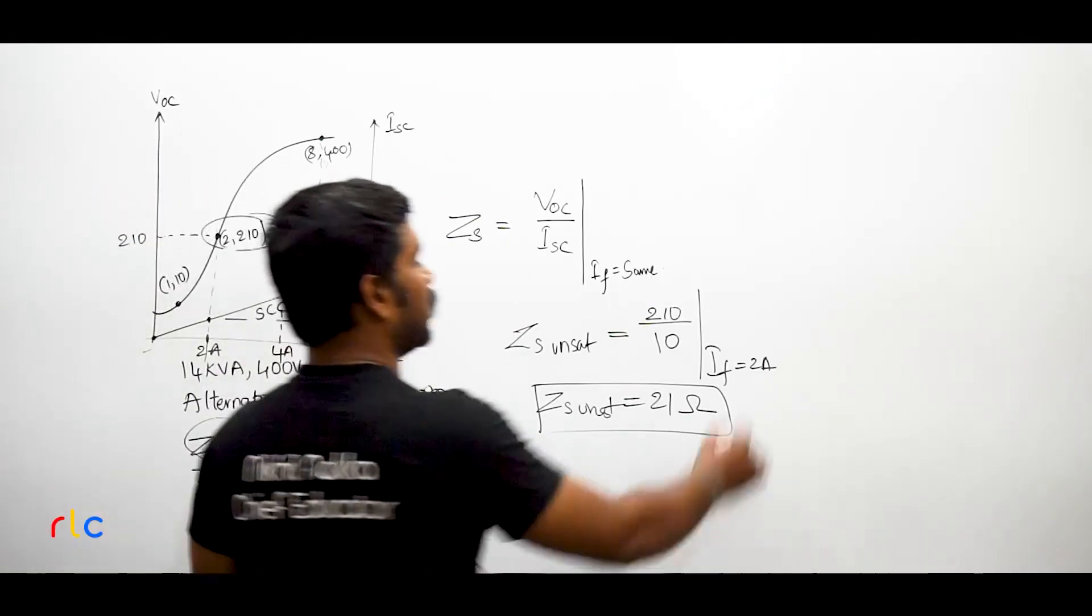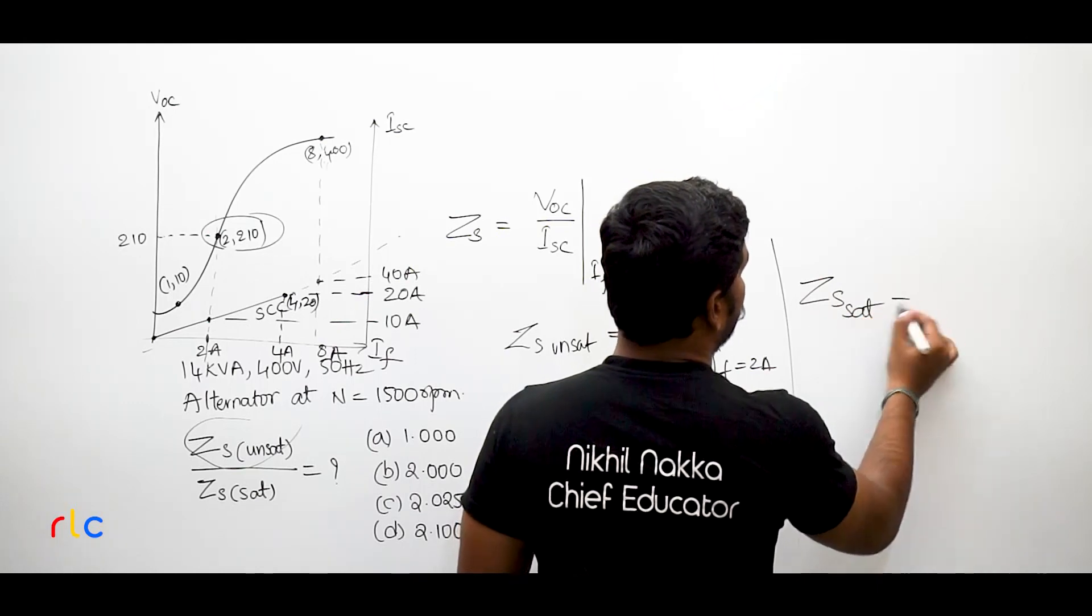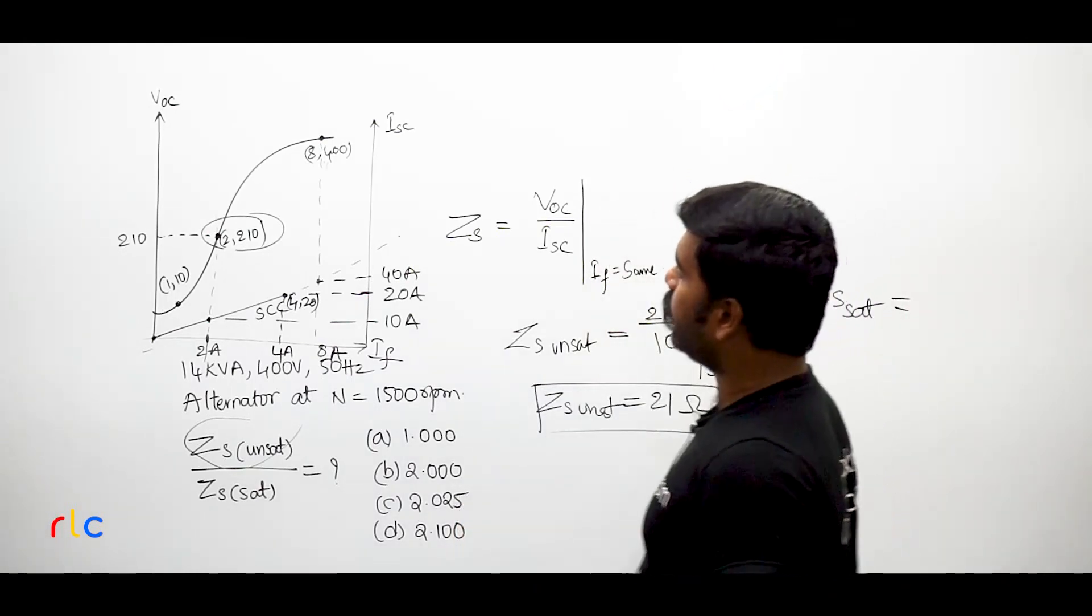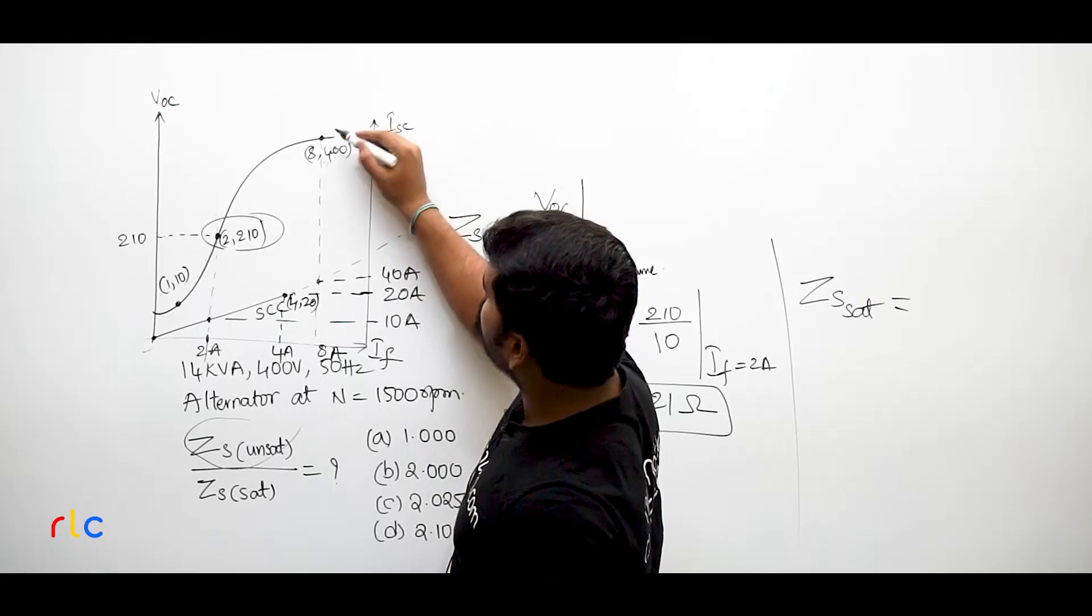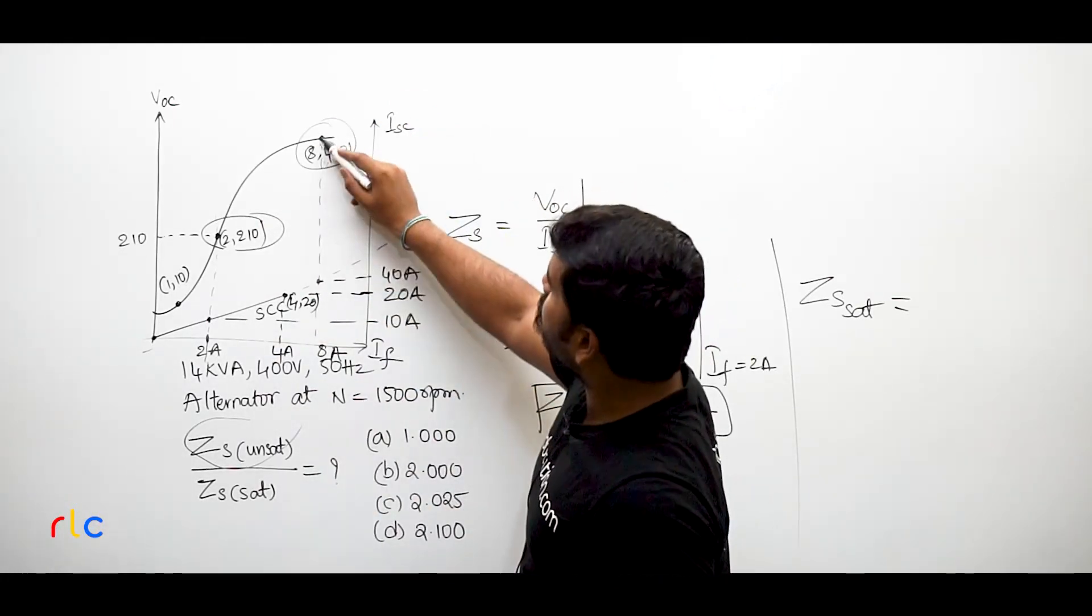Now I will calculate the saturated case of Zs. So Zs saturated. For this I have to enter into the saturated region of the curve. So if you look at the saturated region, this is the saturated region I can observe. So here what is the field current? 8 Amperes.